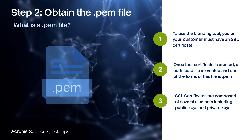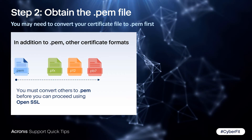The first thing you're going to need is a .pem file, which is provided by your SSL certificate provider. Once the certificate is created, one of the available file formats is the .pem file. The SSL certificate itself is composed of several elements, including both public keys and private keys — this is important if you need to reassemble a .pem file on your own. The easiest option is to simply get a .pem file from your provider, but they may offer other formats such as .pfx, .p12, or .p7b, in which case you'll need OpenSSL to convert between certificate file types.